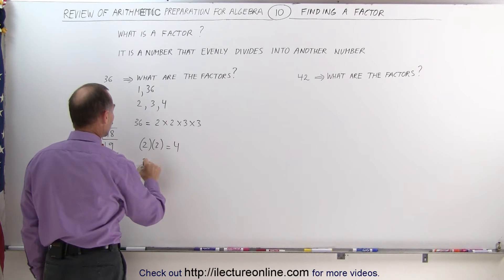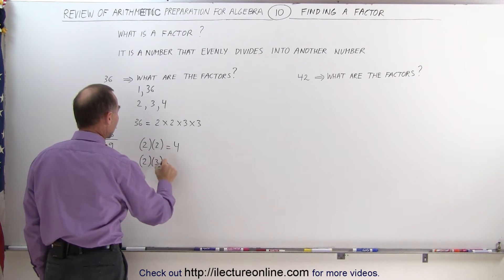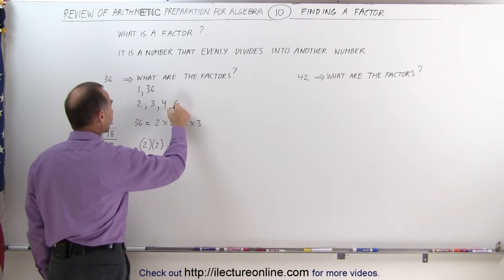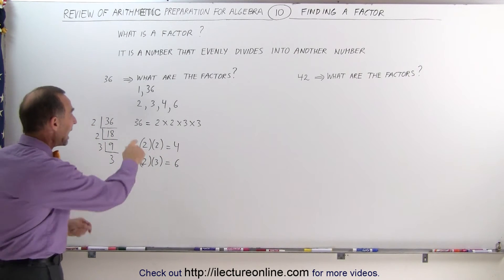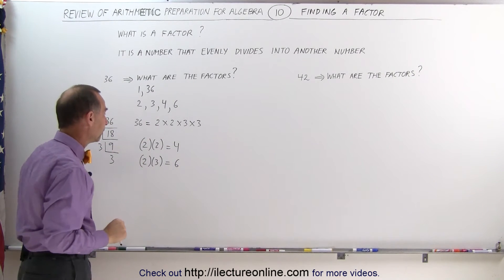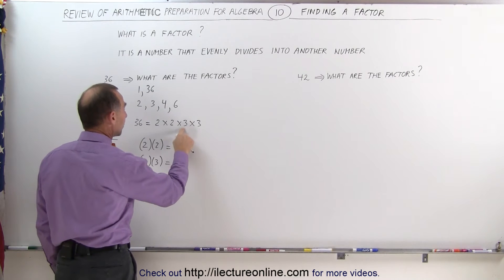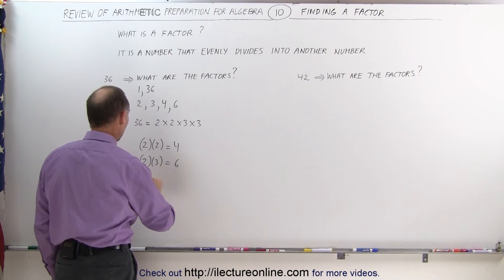You can multiply 2 times 3. That gives you 6, which is also a factor. So what we're trying to do here is multiply any combination of these numbers. Which means we can also multiply 3 times 3. That will also give us a factor: the number 9.